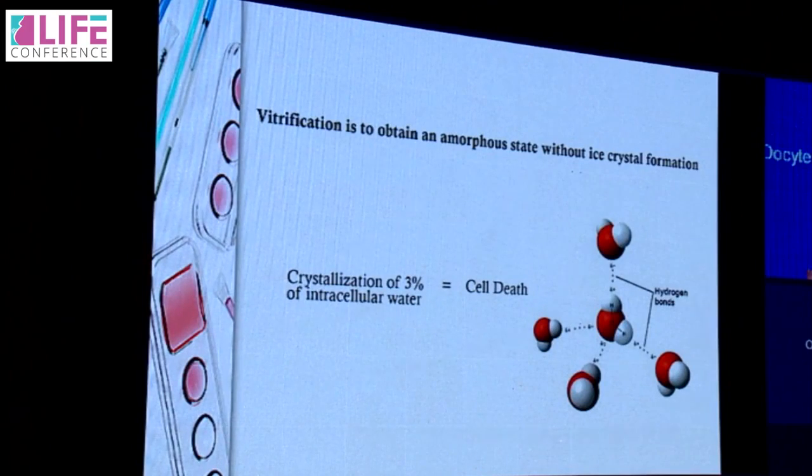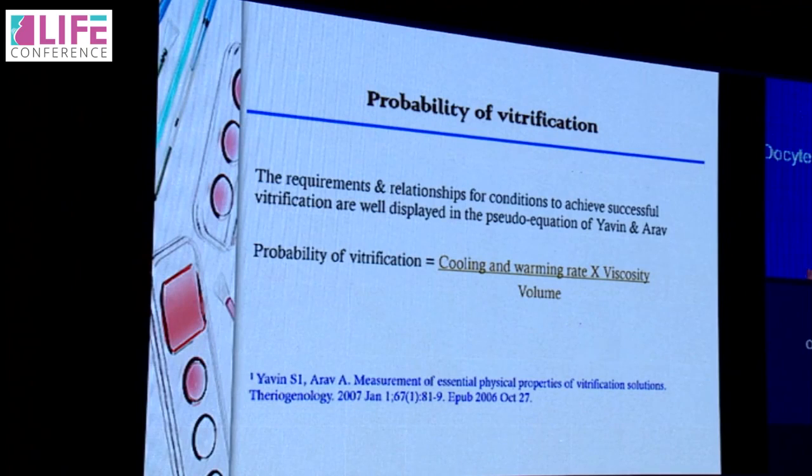Vitrification aims to obtain an amorphous state without ice crystal formation. If even three percent of intracellular water converts into ice, we can have cell death. When we observe ice crystals growing under a microscope, we can see they cut into and damage cell organelles. Mathematically, the probability of successful vitrification increases if we increase cooling and warming rates and decrease the volume — this was the most successful strategy applied.